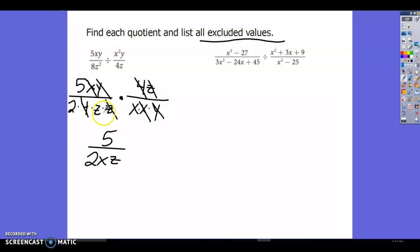Excluded values comes from my variables. x, y, z are all in the denominator here. Doesn't matter if it's from the original problem or the finished product. If there's a variable in the denominator, it could cause an excluded value. So x, y, and z cannot be 0 or this would be undefined.